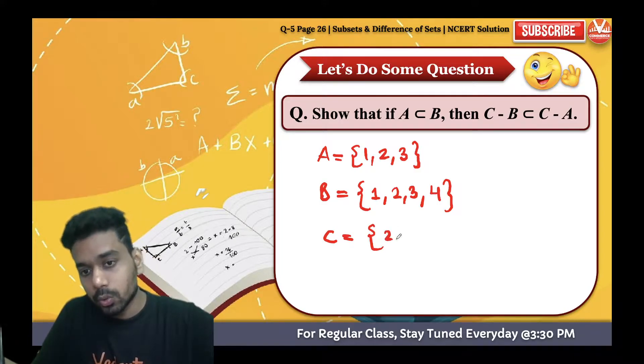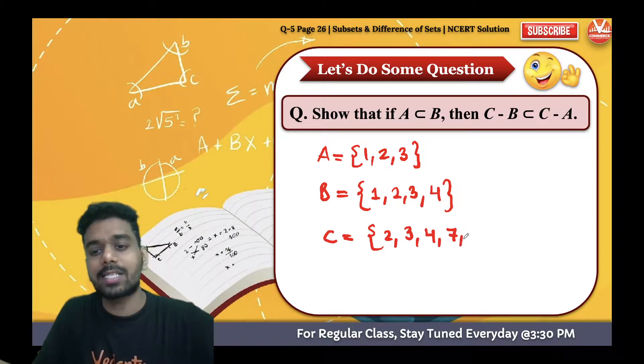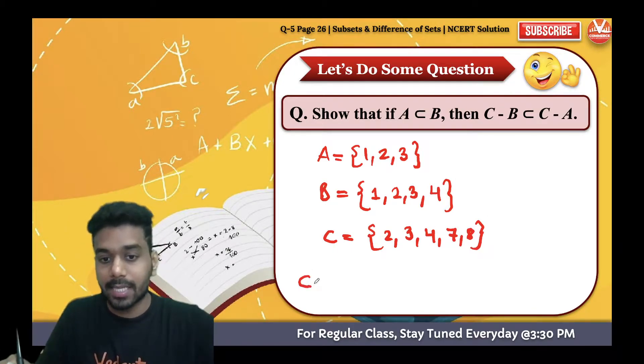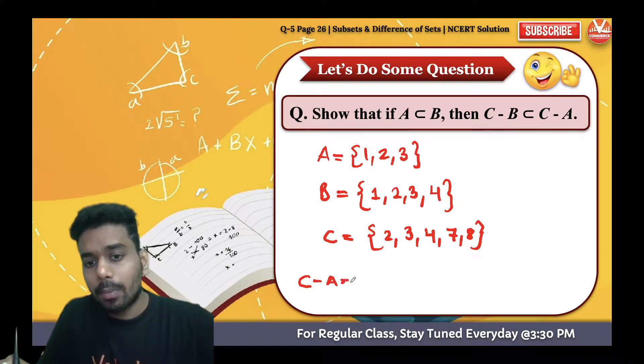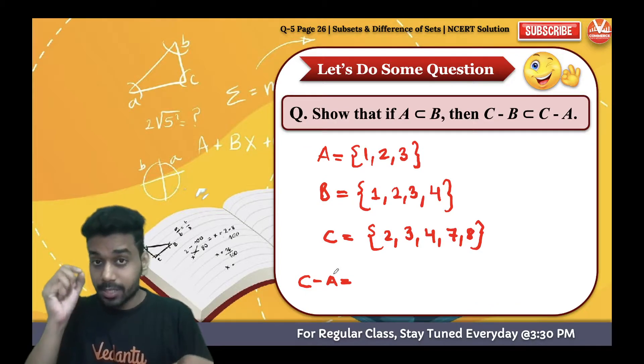Now what is the difference, what is C minus A? Now it's common sense: A is a smaller set, B is a bigger set. Listen carefully, A is a smaller set, B is a bigger set.